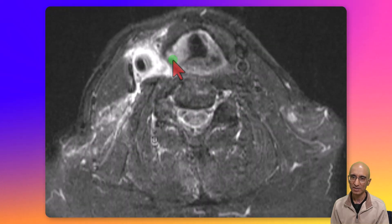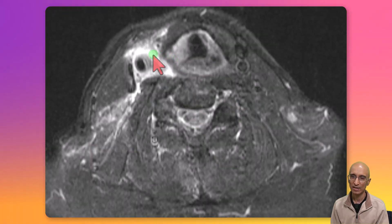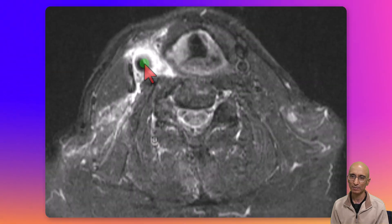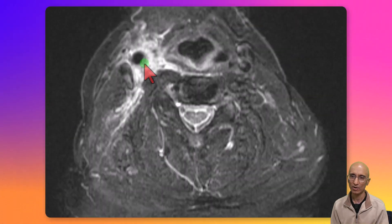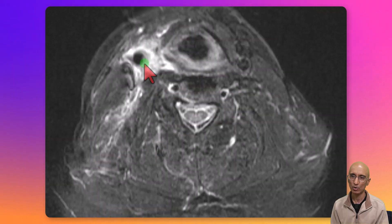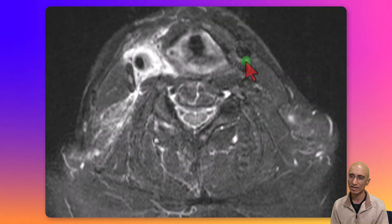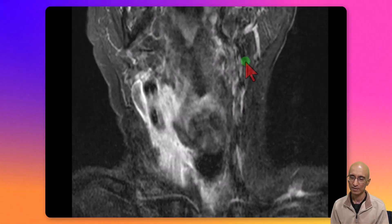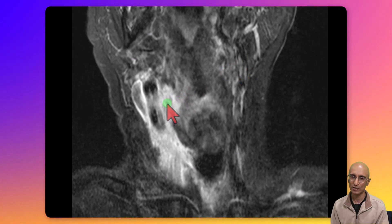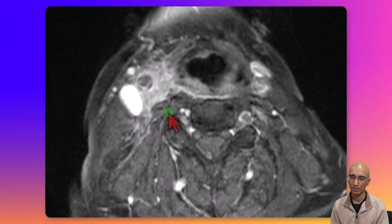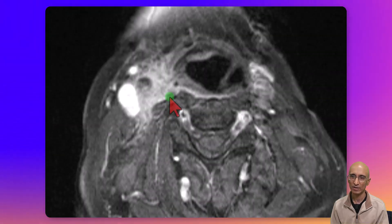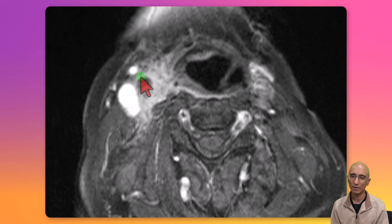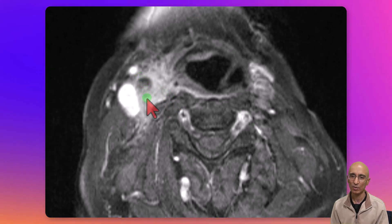On the MRI STIR images, we can see extensive edema surrounding the common carotid artery. There is an eccentric plaque in the common carotid artery with minimal luminal narrowing. The coronal STIR images demonstrate similar findings of extensive inflammatory changes. Following administration of intravenous contrast, there was enhancement surrounding the distal common carotid artery.